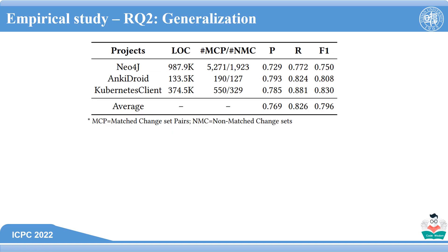Here are the propagation requirement prediction results for three Java projects. These projects are comparatively large, popular open-source projects. For all projects, the average precision, recall, and F1 score is above 0.75. The prediction model shows no significant differences among these projects.